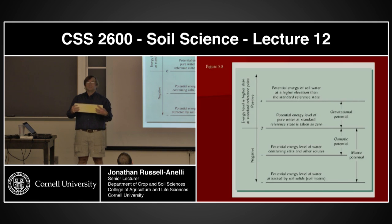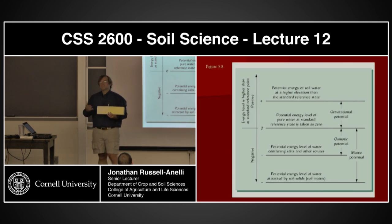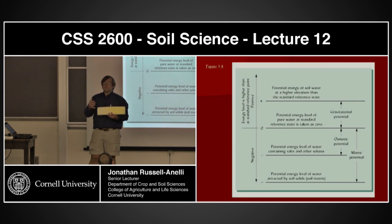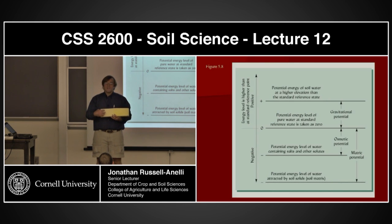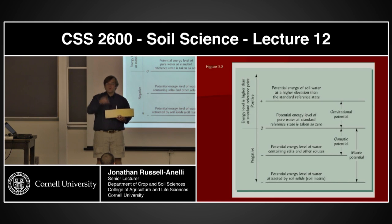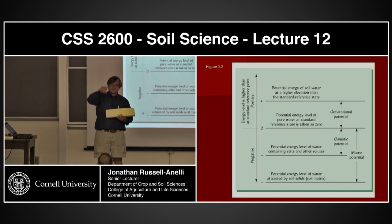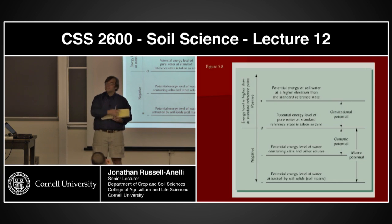The matrix potential doesn't really have anything to do with the speed of the pull over the absolute pull. The texture is going to drive how fast things move because you're going to have the pathways. If I have clay, it's going to be going like this; if I have sand, it's going to be going like this. So the relative distance traveled is going to be based on the texture. The absolute distance is basically going to be based on the matrix potential.